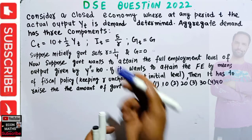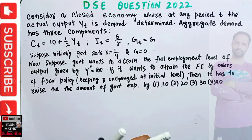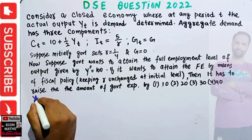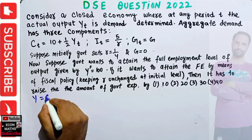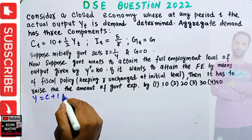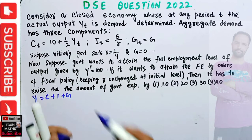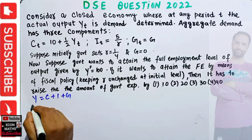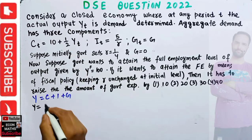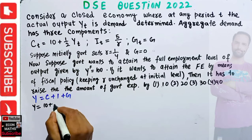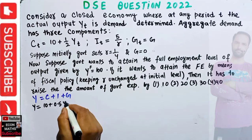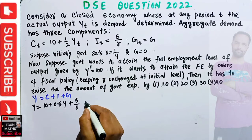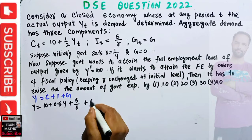I have explained how to find the equilibrium level of output in the earlier video; let's quickly rewrite that here. We know that total income equals consumption expenditure plus investment expenditure plus government expenditure. So y = 10 + 0.5y + 5/r + g.